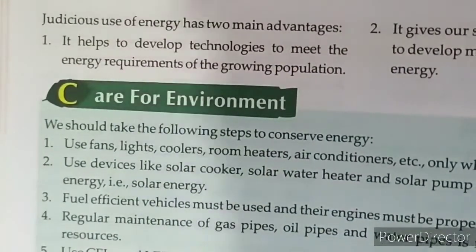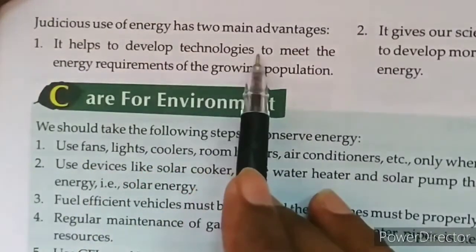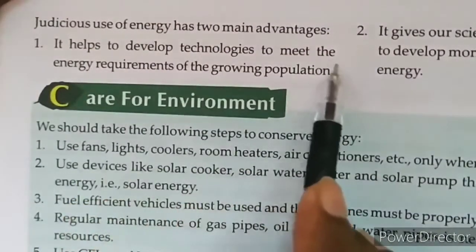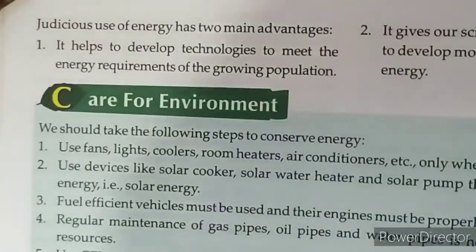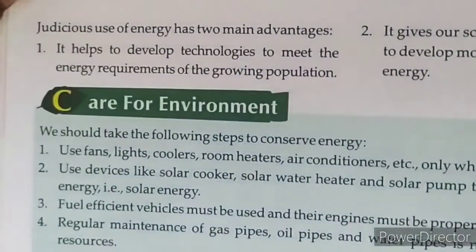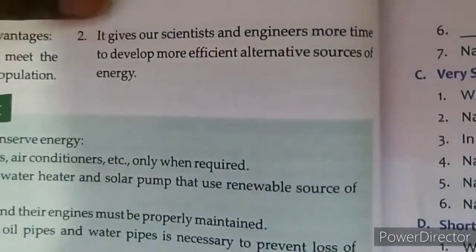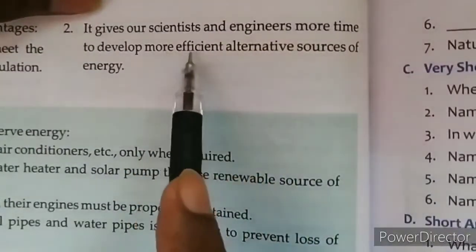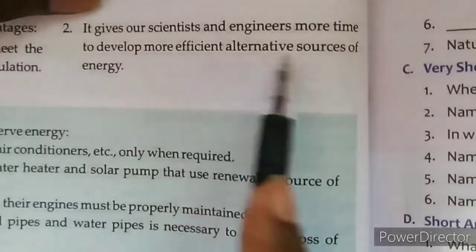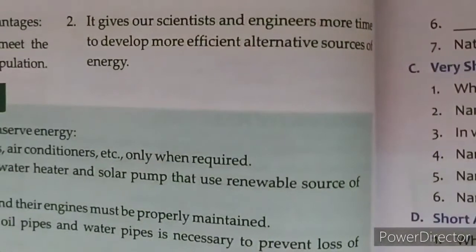Judicious use of energy has two main advantages: first, it helps to develop technologies to meet the energy requirement of the growing population. Second, it gives scientists and engineers more time to develop more efficient alternative sources of energy — efficient alternatives बनाने के लिए उनको ज़्यादा time मिलेगा।